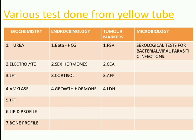From the yellow tube, for biochemistry we can perform urea and electrolytes, liver function test, amylase, thyroid function test, lipid profile, and bone profile. In endocrinology, we can do beta-HCG, sex hormone tests, cortisol, and growth hormone. For tumor markers, we can detect PSA, CEA, AFP, and LDH. In microbiology, various serological tests for bacterial, viral, and parasitic infections can also be done.